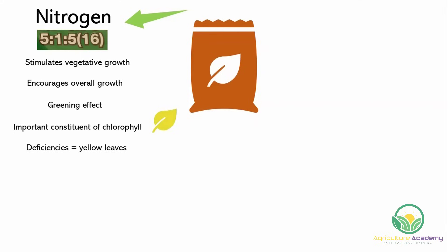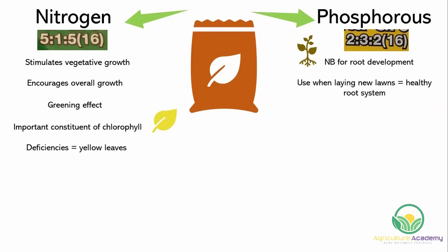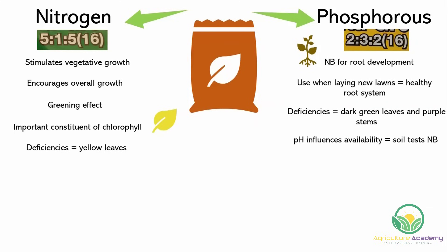Phosphorus is especially important for root development in plants. Fertilizers with a higher phosphorus concentration are best when you want to encourage root development. These are perfect when laying new lawns so the grass can establish a healthy root system. Phosphorus deficiencies can present as dark green leaves and purplish stems. The pH of a soil will influence the amount of phosphorus available to plants, so it is important to test your soil if you notice any phosphorus deficiency symptoms.